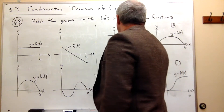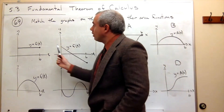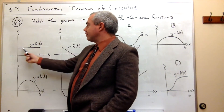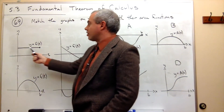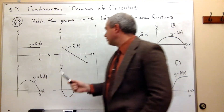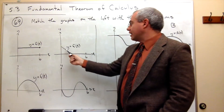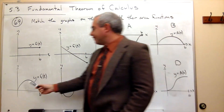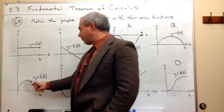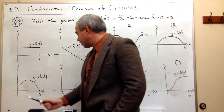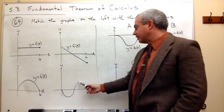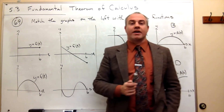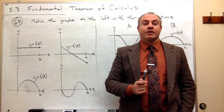Over here I have four graphs. One, you can see that's a nice constant function. One, it's a line but it's going down. Then I've got kind of a parabola looking thing, and finally we've got kind of like a sine or cosine wave type graph.